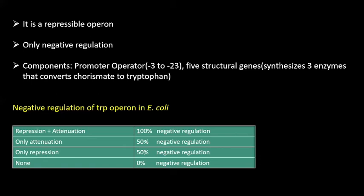Both the lac repressor and TRP repressor are negative regulators. However, when the repressor is no longer bound to the operator in the case of lac operon, lactose binds to the repressor; while in the case of tryptophan operon, tryptophan does not bind to the operator unless it forms a complex with the repressor first. This difference exists because the lac operon helps in catabolism – that is, the burning of lactose – while the tryptophan operon helps in the biosynthesis of tryptophan. The tryptophan operon has the following components: promoter, operator, leader sequence TRPL, and five structural genes that help in the conversion of chorismate to tryptophan.